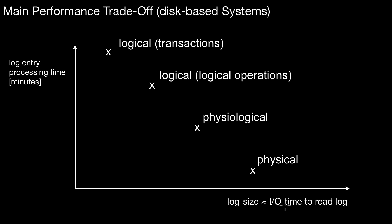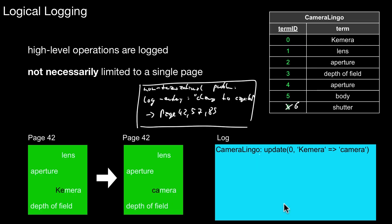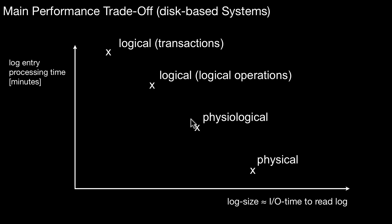On the other axis, we have the log entry processing time — the time needed to reapply those changes. In a disk-based system, that may take a while. If you replay all actions done by a transaction, maybe you have to load a couple of pages and write them back. For disk-based systems, the trade-offs are: physical logging gives a relatively big log file, but applying the changes is relatively cheap — you load some database pages but there's no high-level processing needed.